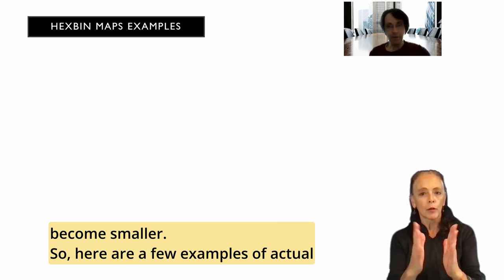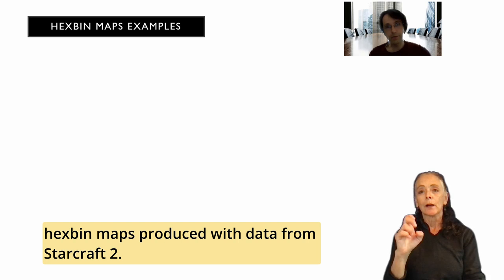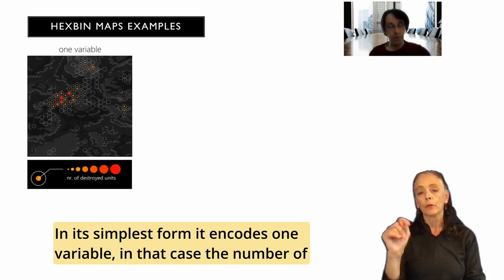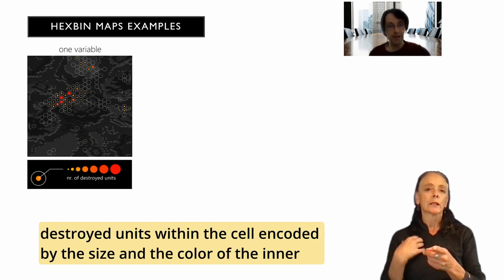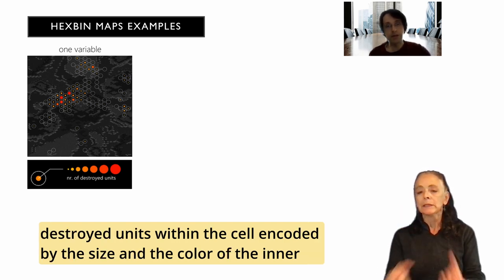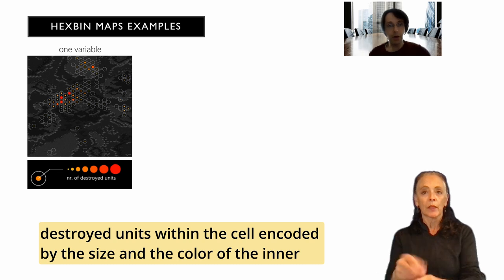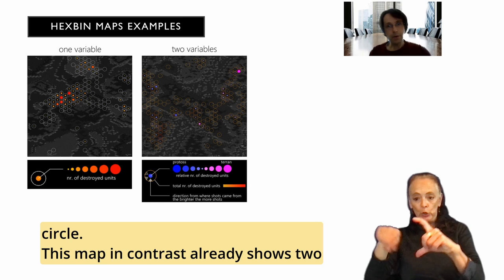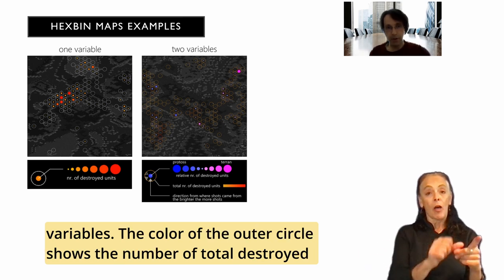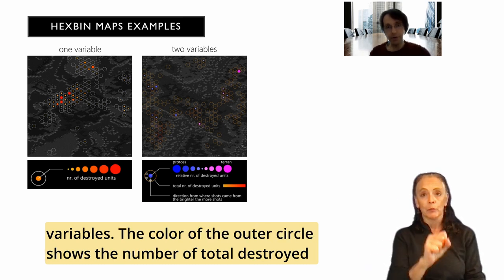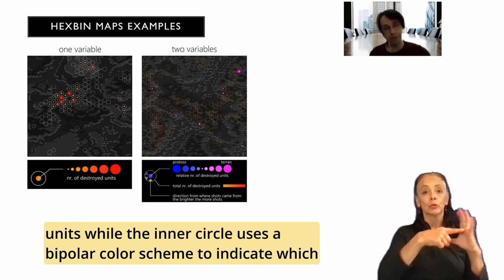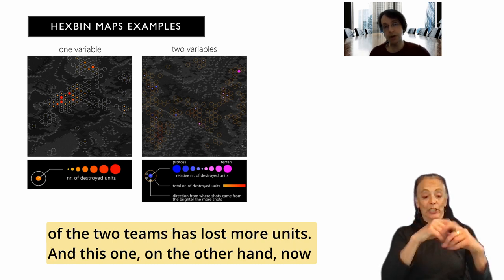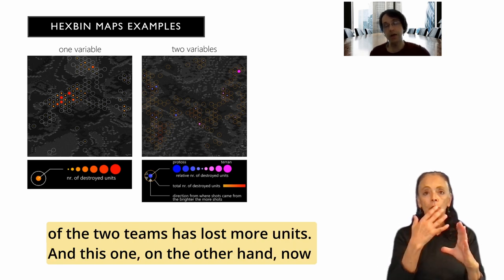Here are a few examples of actual hexpin maps produced with data from StarCraft II. In its simplest form, it encodes one variable, so in that case the number of destroyed units are encoded by the size and the color of the inner circle. This map, in contrast, already shows two variables. The color of the outer circle shows the number of total destroyed units, while the inner circle uses a bipolar color scheme to indicate which of the two teams has lost more units.